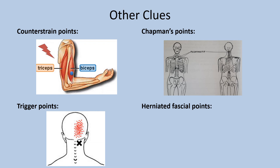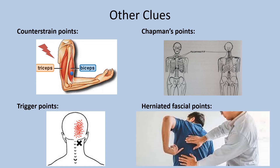Trigger points occur because a muscle is overstressed. Most always there is a dysfunctional or structural issue, and if the causative issue is not corrected, these trigger points will soon reactivate. A patient with a herniated fascial point may clue you into that being the problem during the history. When describing where and how they hurt, they often press one or more fingers into the spot and may say that they feel like someone just needs to push the spot back in. They also may describe the pain as an ache, pinching, or catching sensation.